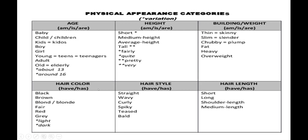To talk about hair color: I have black hair, I have brown hair, I have blonde hair, I have fair hair, I have red hair, I have grey hair. You can add light or dark — for example, dark brown or light brown. When we talk about height, we use is or are. For example: I am medium height, I am quite short, or I am pretty tall or very tall.